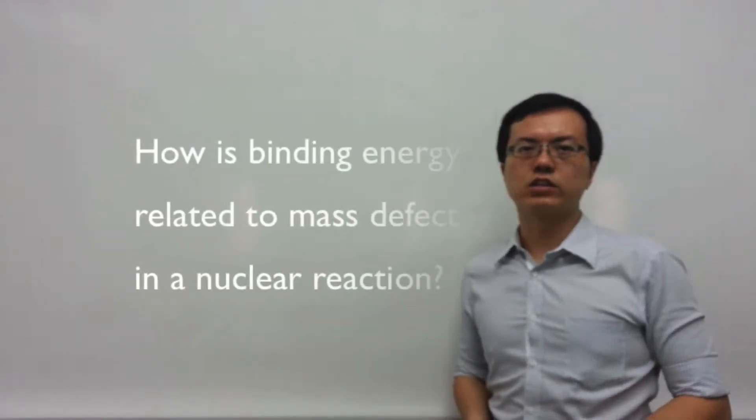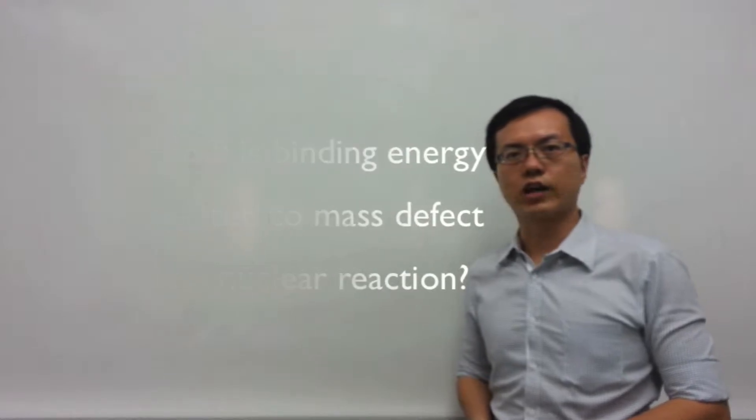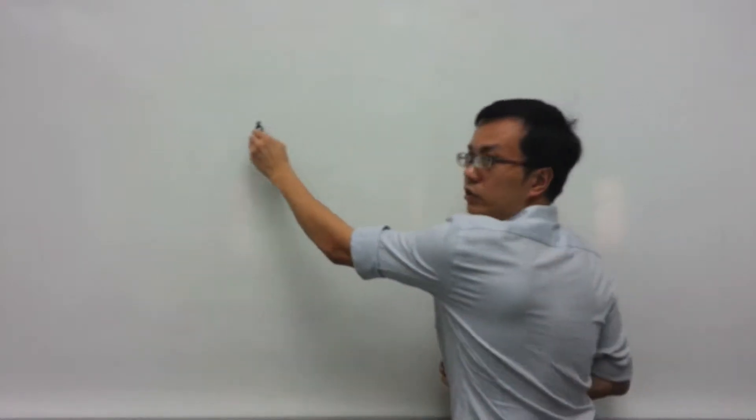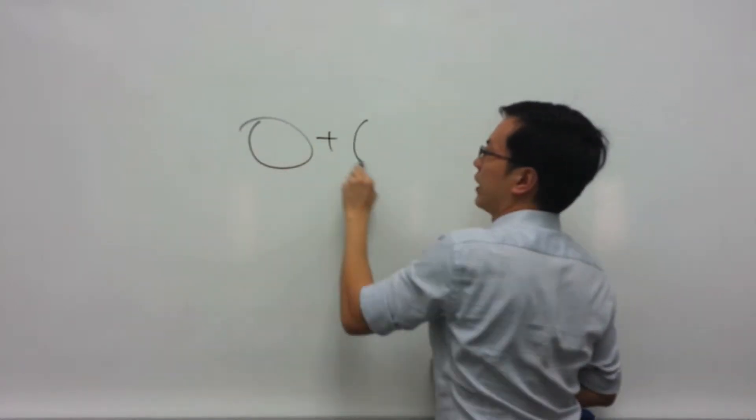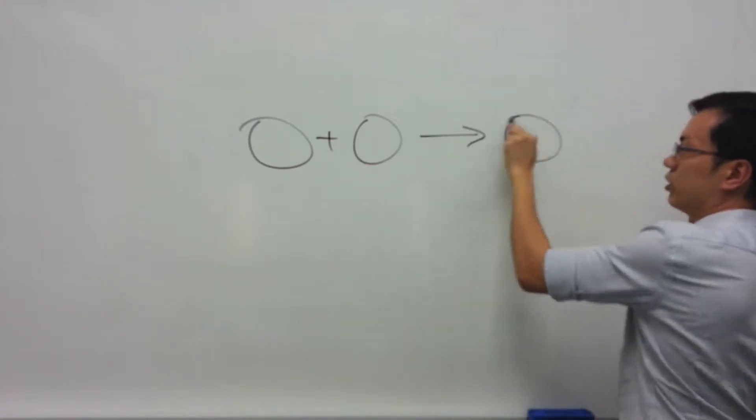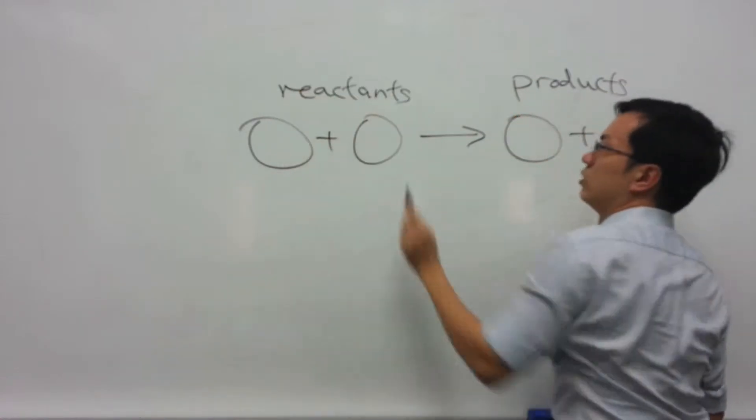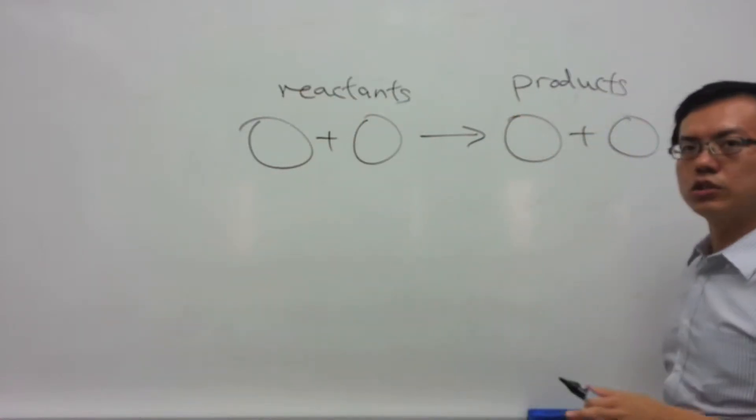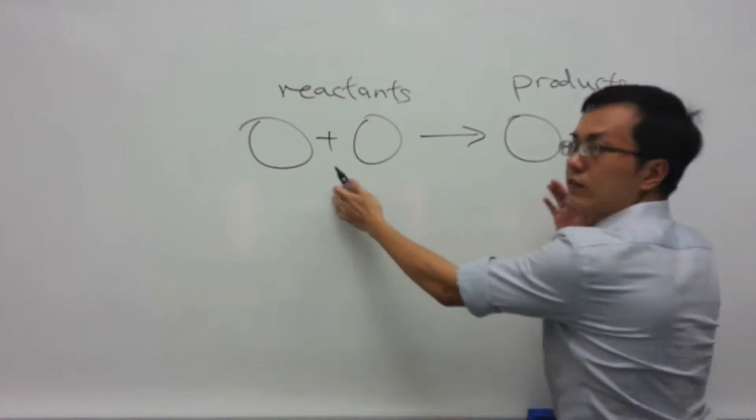How is binding energy related to the mass defect in a nuclear reaction? In a nuclear reaction, you have the reactants forming the products, and energy might be found on either side of the equation.